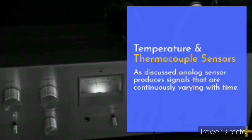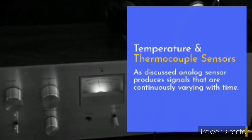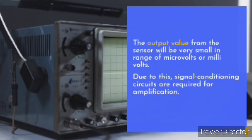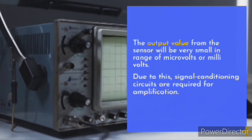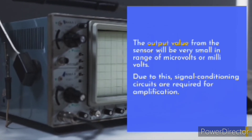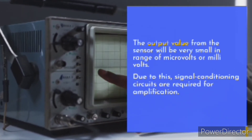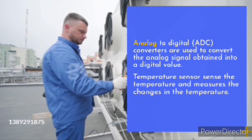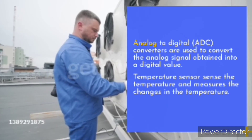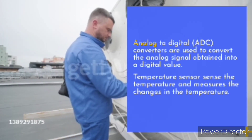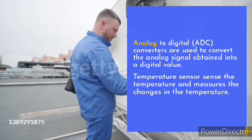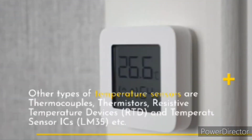As discussed, analog sensors produce signals that are continuously varying with time. The output value from the sensor will be very small, in the range of microvolts or millivolts. Due to this, signal conditioning circuits are required for amplification. Analog-to-digital converters are used to convert the analog signal into a digital value. Temperature sensors sense and measure changes in temperature. Other types of temperature sensors include thermocouples, thermistors, resistive temperature devices (RTDs), and temperature sensor ICs like the LM35.